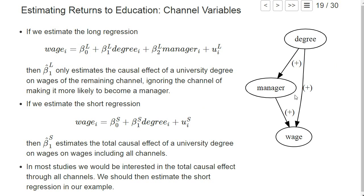We would add the manager variable only if we are interested in the direct effect from degree on wage that doesn't work through the channel that having a university degree makes it more likely to become a manager. When thinking about whether to add a control variable, make such a graph in your mind and think about the relationship between that variable and the main variable you're interested in. If it's a channel variable, you probably don't want to add it unless you're sure you want to ignore that particular channel.